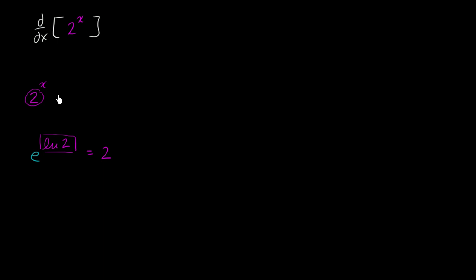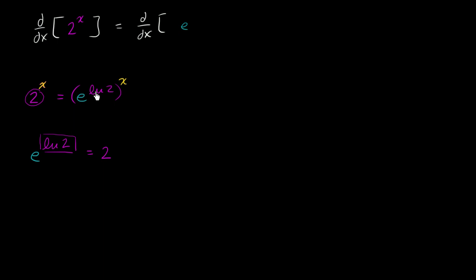So instead of writing 2 to the x, we could rewrite 2 as e to the natural log of 2, and then raise that to the x power. So let's do that right over here — instead of taking the derivative of 2 to the x, let's take the derivative with respect to x of e to the natural log of 2, raised to the x power.